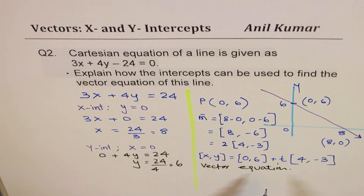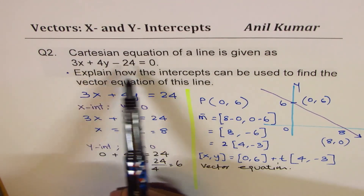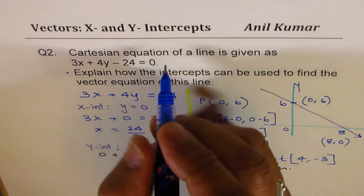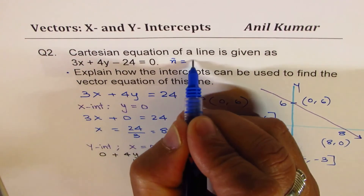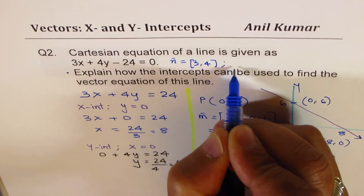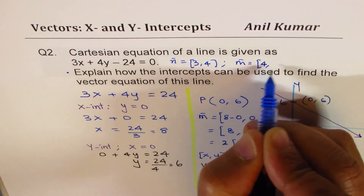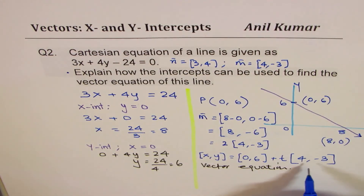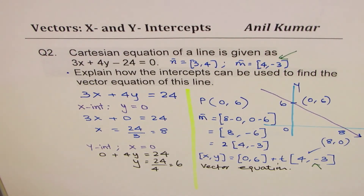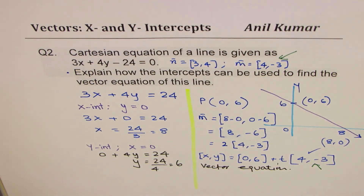There are alternate ways: from the Cartesian equation 3x plus 4y equals 24, the normal vector is (3, 4). The direction vector is obtained by flipping and changing one sign to get (4, -3) — giving the same result. So given a Cartesian equation, you can find intercepts and then write the vector equation of the line. Thank you and all the best.